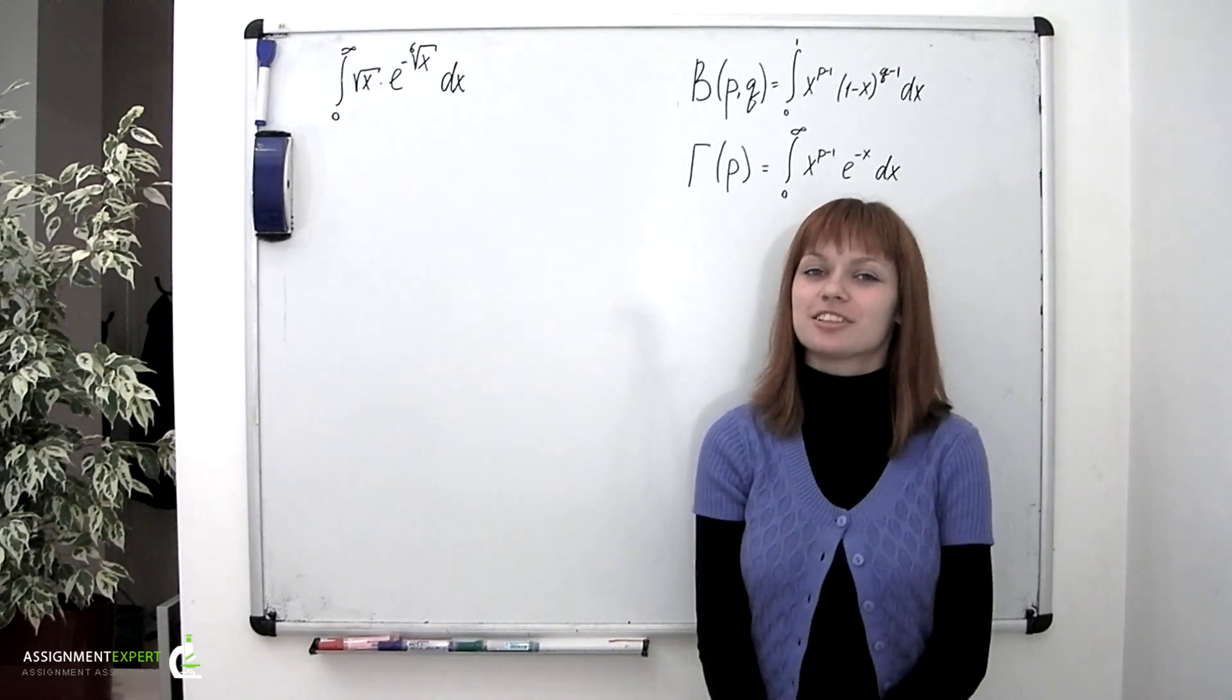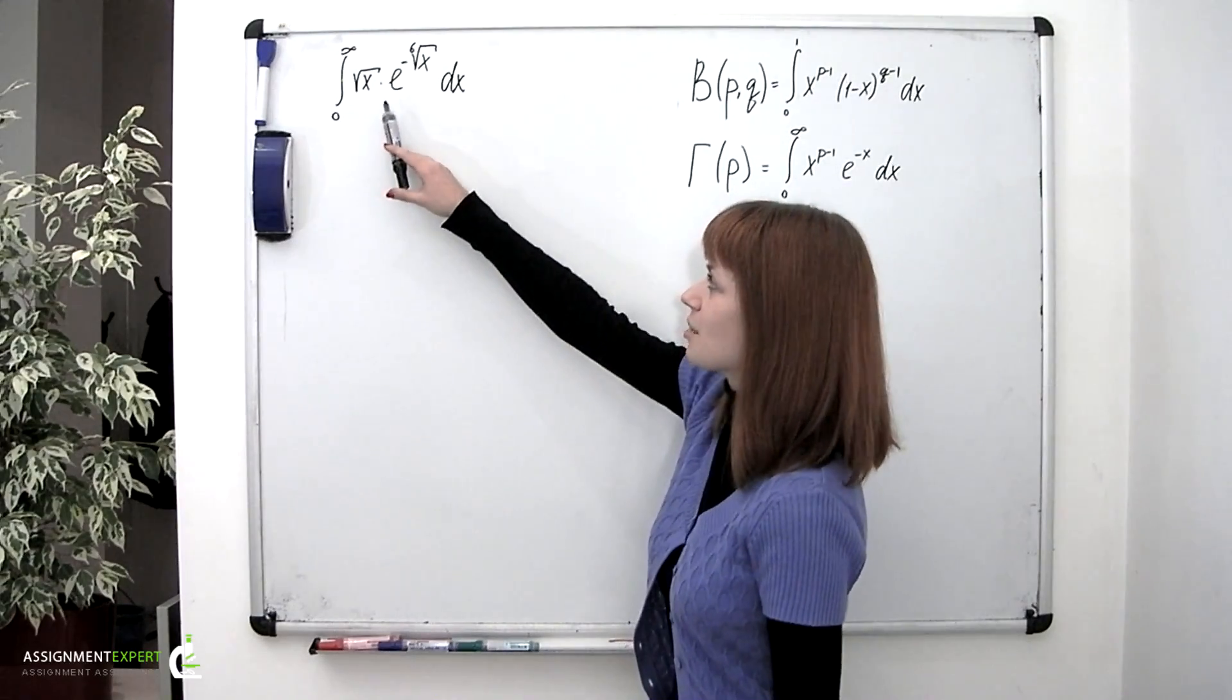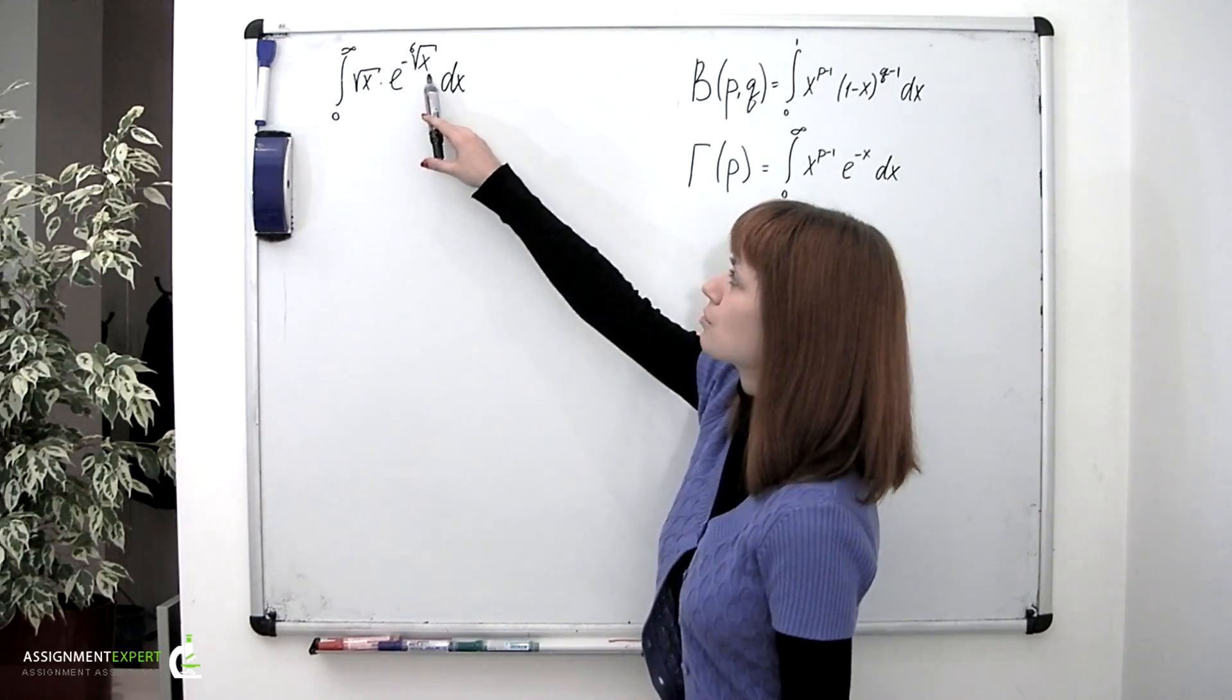We have a tough looking integral here. Integral from 0 to infinity of square root of x times e to the power of negative 6 root of x dx.